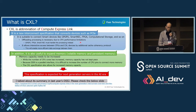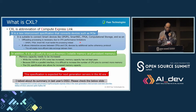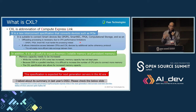GPGPU, FPGA, and SmartNIC must handle the processing instead. It allows interactive access between CPUs and CXL devices via an additional cache coherence protocol. This enables more efficient data exchange between them. In addition, it's also useful to expand memory — both volatile memory and persistent memory.